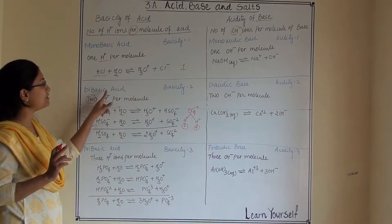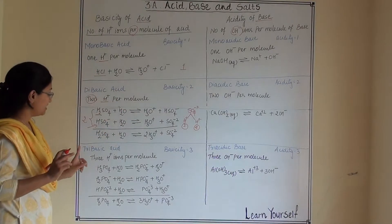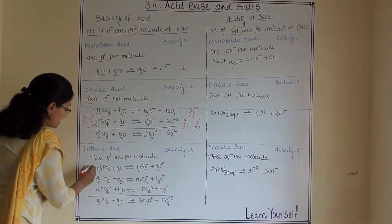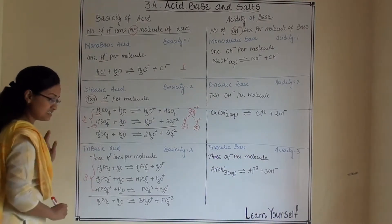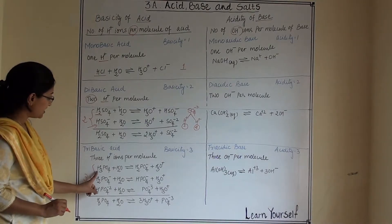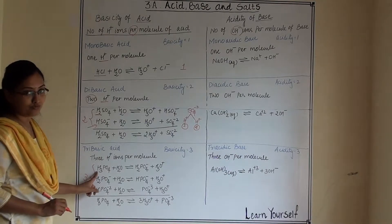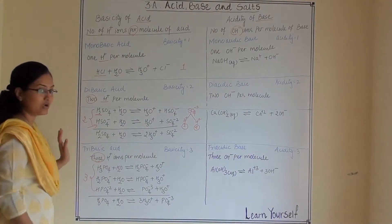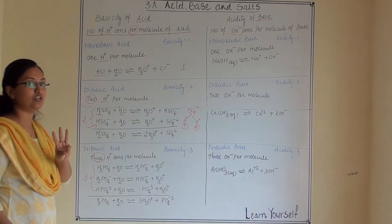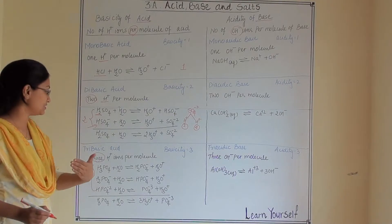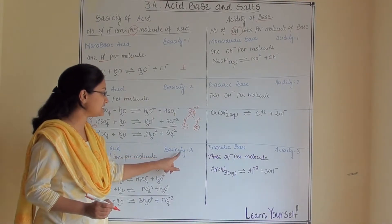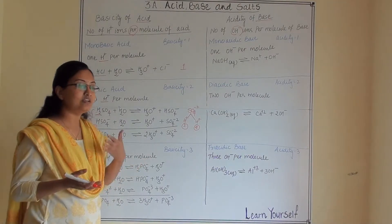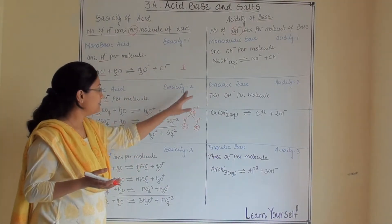That's why H2SO4 is a dibasic acid. Now tribasic acid — this acid dissociates in three steps. For example, H3PO4. It gives three hydronium ions while it dissociates, and its basicity is three. However many hydronium ions are generated, that is its basicity.